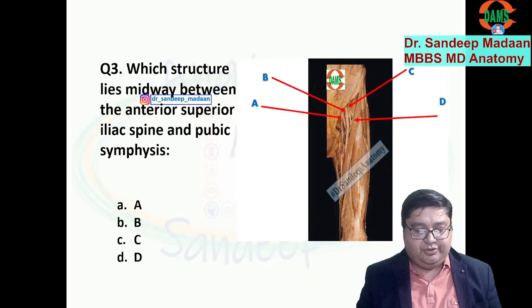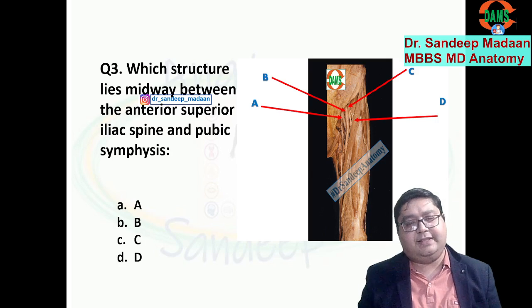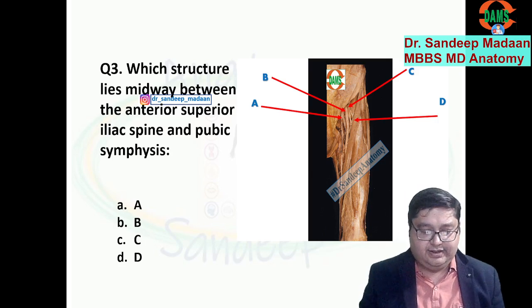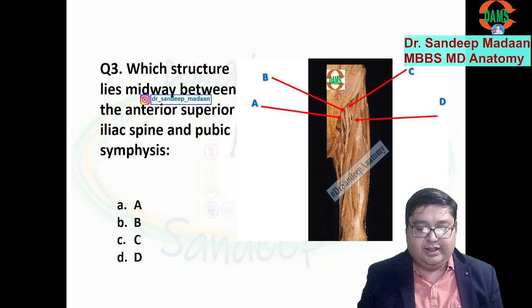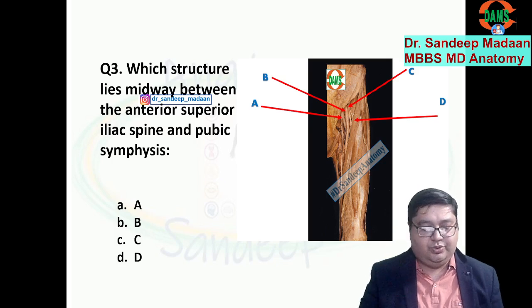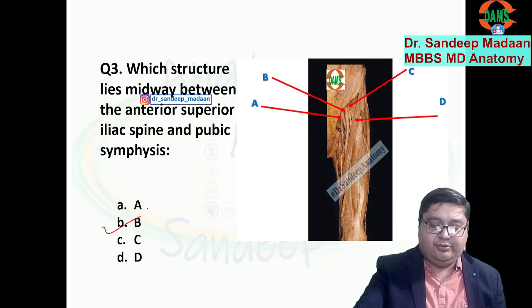Next question: what structure lies midway between ASIS and pubic symphysis? That is the mid-inguinal point. The answer will be femoral artery — option B, femoral artery.